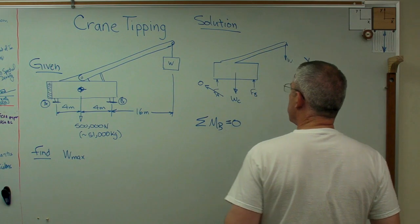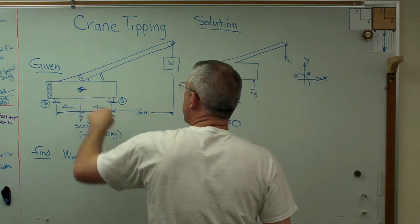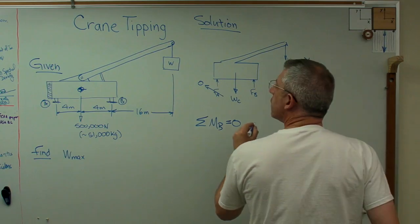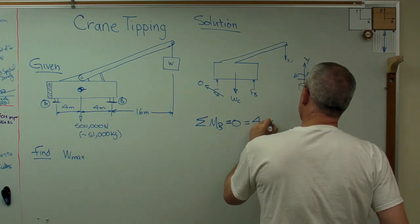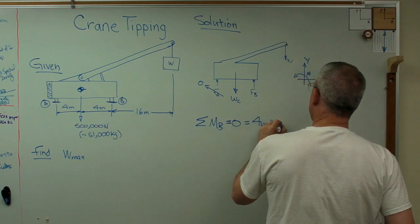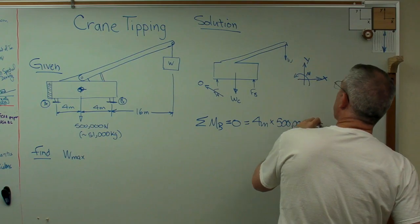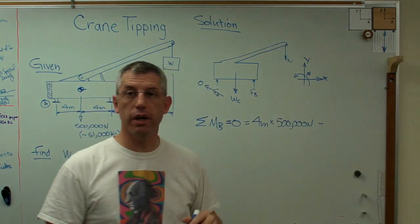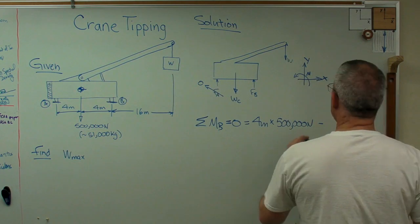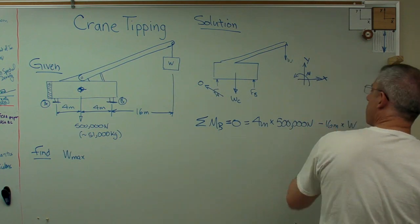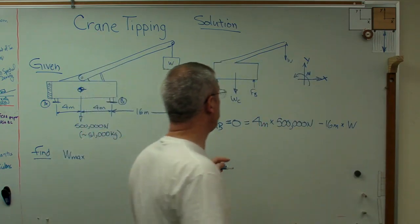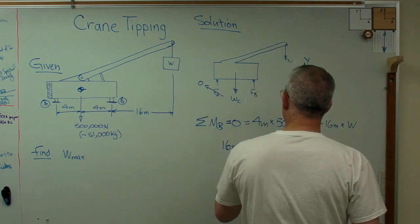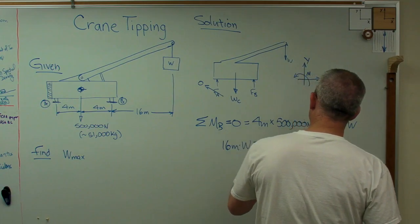So I'm going to set the sum of those moments equal to zero, and let's look at the force acting downward here. That's going to act in the counterclockwise direction. So that's in agreement with my positive sign convention. So that's going to be four meters times, let's put the 500,000 newtons in here. And then this weight here is going to generate a moment in the clockwise direction. Since that goes against my sign convention, that's going to be negative, and that's going to be 16 meters times W. Well, that's it. One equation, one unknown. It doesn't look too hard. Let's make one small change here. Let's push a few symbols around.